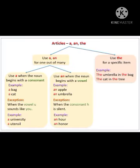When a noun starts with a consonant sound, we use A. For example: a bag, a cat. However, there is an exception — even if a word starts with a vowel letter, if it has a consonant sound, we use A. For example: a university, a utensil.